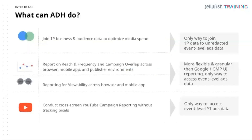What can Ads Data Hub do? It allows us to join first-party business data and audience data together. When we talk about first-party data, we're talking about data that you own as an organization, or that your client owns if you're an agency — that could be website or CRM data. Audience data is perhaps the audiences we're targeting in DV360 or Google audiences used to target our media.